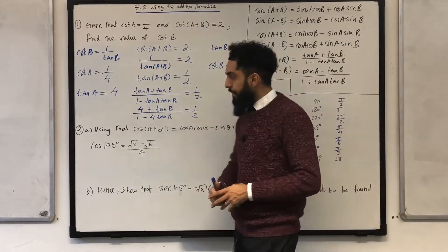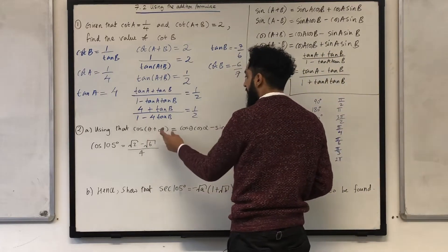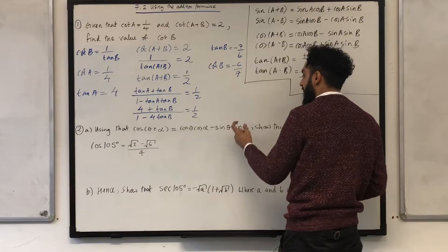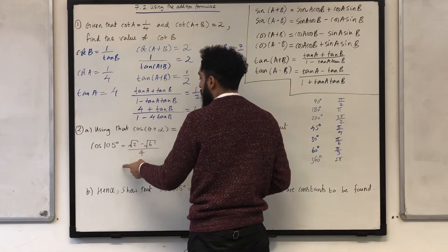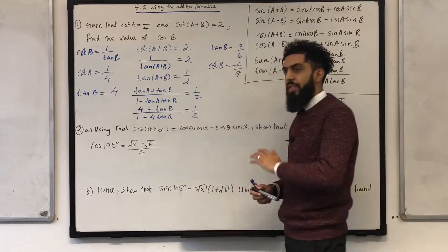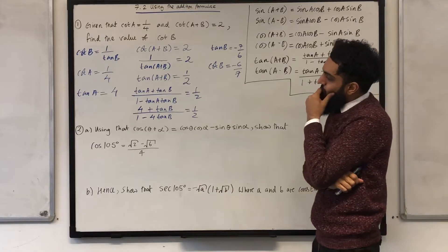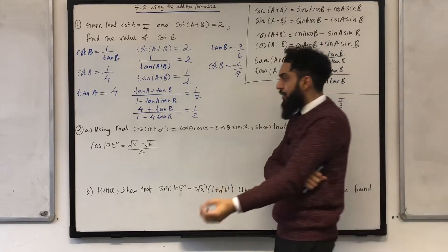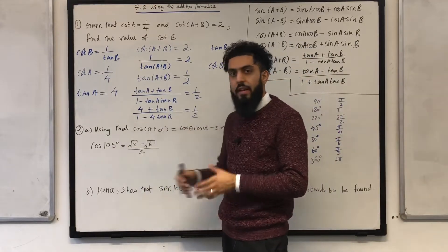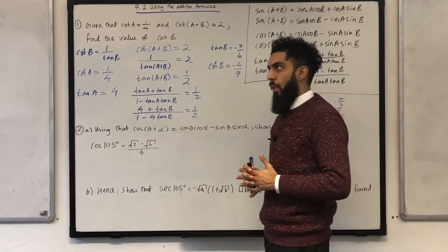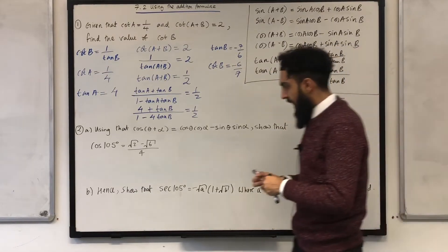Let's move on to question number 2. It says, using that cos(theta + alpha) is equal to cos theta cos alpha minus sin theta sin alpha. Show that cos 105 degrees is equal to square root 2 minus square root 6 all over 4. Right. Now, I need to pick a suitable value of theta and alpha such that theta plus alpha will be 105 degrees. Well, I can select 45 and 60 degrees. So, I can write the following.